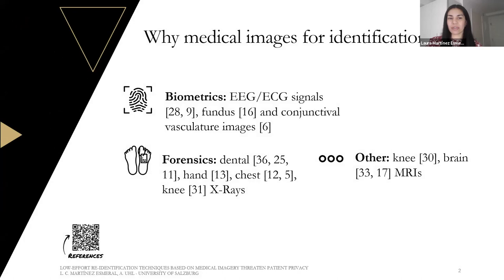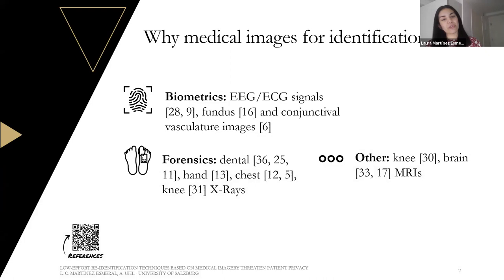The first question one might wonder is: why medical images for identification? There are different applications for these images. In particular, we can use them for biometrics — for example, EEG signals as well as ECGs. Also, fundus images or images of the eye vasculature can be used for this purpose. We can also use them for forensics — imagine a case where the face or fingerprints are not recognizable. As an alternative, we can use images from the insides of the body. In particular, we have seen methods employing dental, hand, chest, and knee X-rays for this.